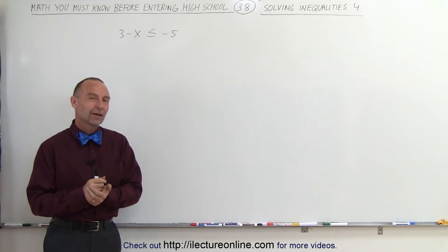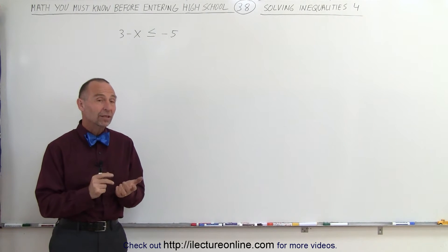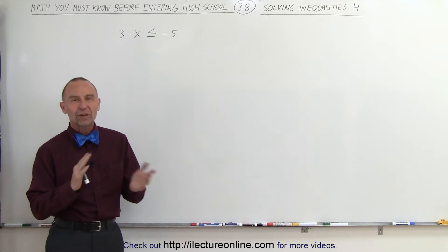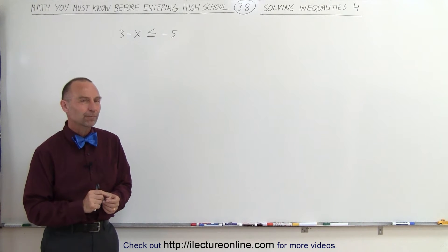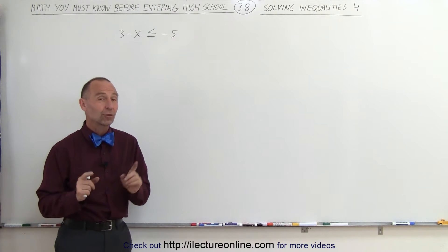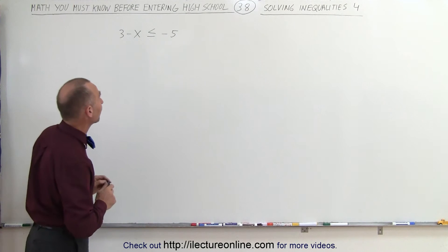Welcome to Electurnal Line. A very important aspect of inequalities is when we multiply both sides of an inequality by a negative number. Then something very strange happens, so let's pay attention and see what happens here.